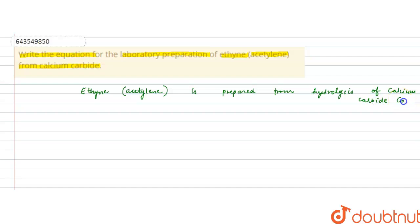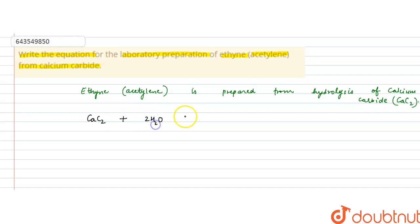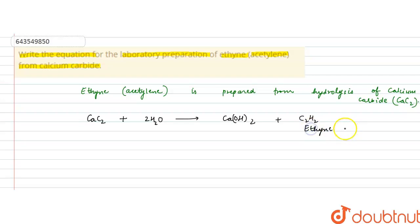Calcium carbide is CaC₂. Writing down the equation: calcium carbide, CaC₂, plus water — since hydrolysis means in the presence of water — forms calcium hydroxide, Ca(OH)₂, and ethyne gas, C₂H₂, is produced in gaseous form.